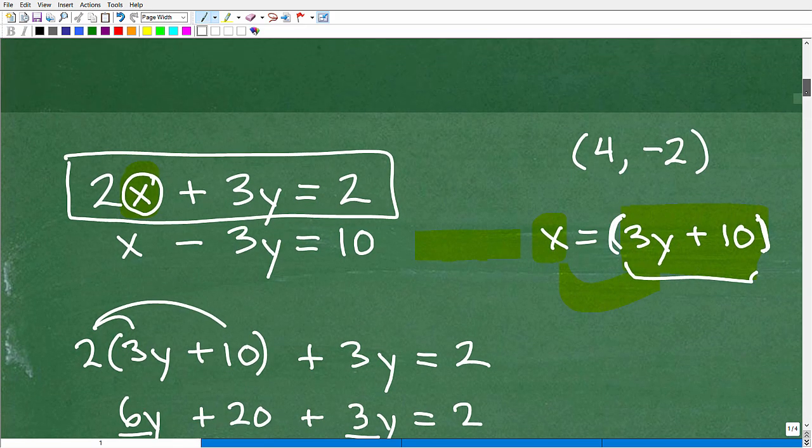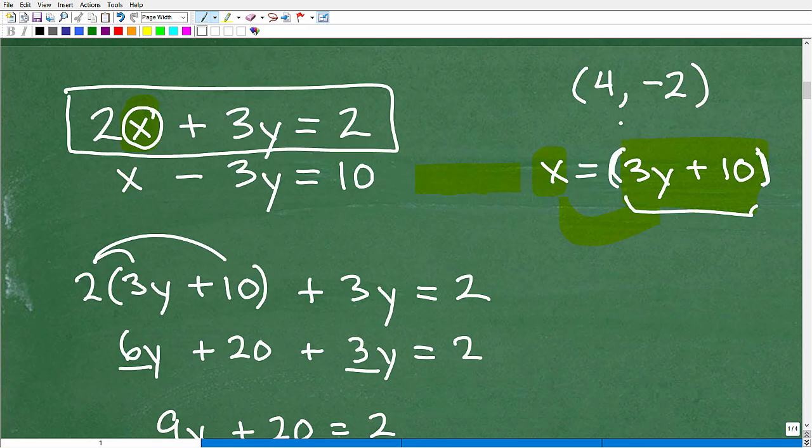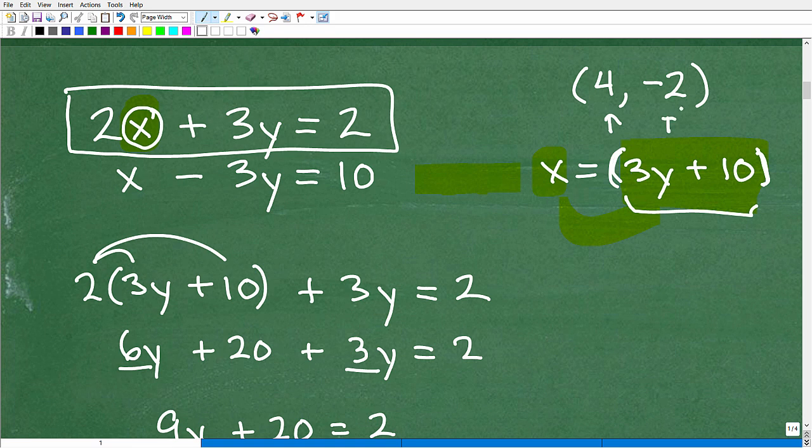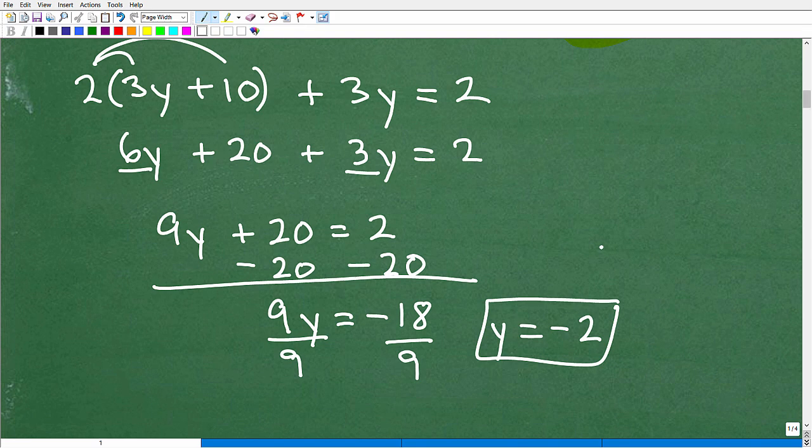y equals negative 2. Up here, remember I said this is the answer: this is x and this is y. So there's my -2. I know now that y = -2. I just solved for it. Let me erase that a little bit better. y = -2, and that's how we solve for it right there. So now let's get x.